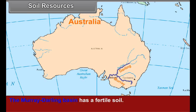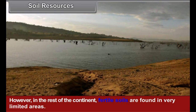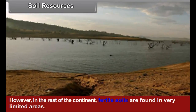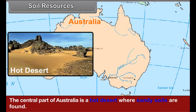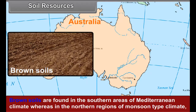Soil resources: The Murray-Darling basin has fertile soil. However, in the rest of the continent, fertile soils are found in very limited areas. The central part of Australia is a hot desert where sandy soils are found. Brown soils are found in the southern areas of Mediterranean climate, whereas in the northern regions of monsoon type climate, red-colored soils are found.